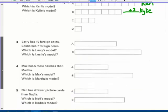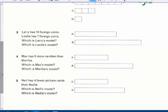Larry has ten foreign coins. Leslie has seven foreign coins. Which is Larry's model? Well, now it's not broken up into parts. But I can clearly see that one bar, B, is longer than the other. So the B must be Larry.